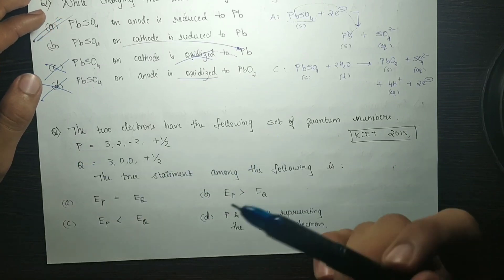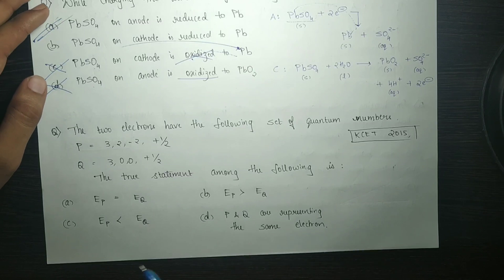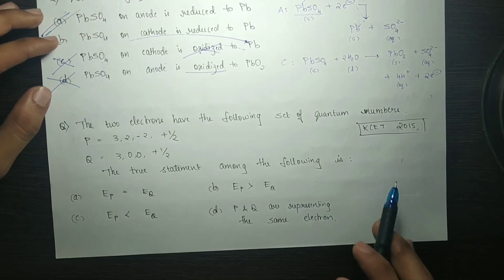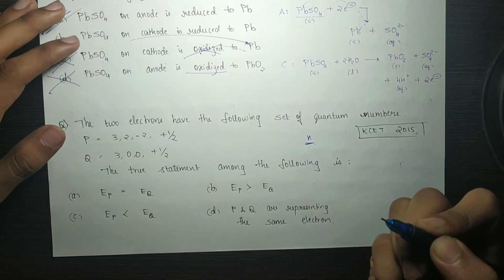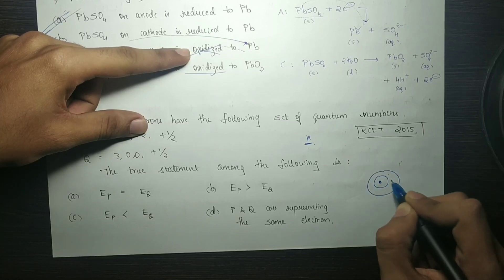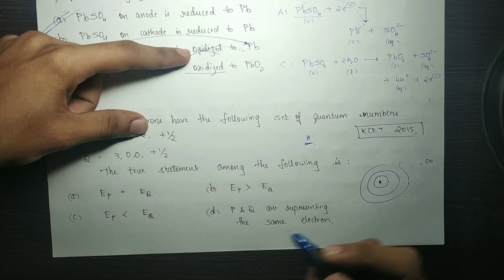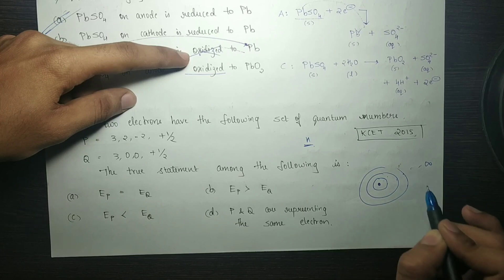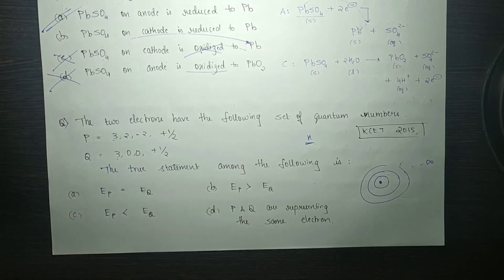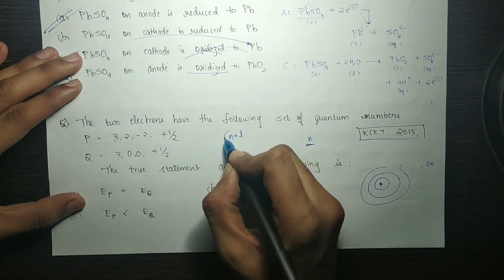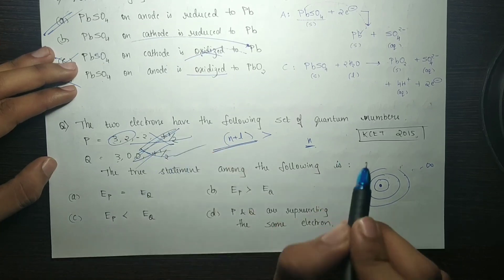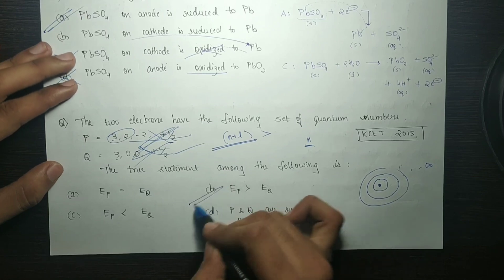Next question: two electrons have the following set of quantum numbers — P: 3, 2, minus 2, plus half. With the spin, magnetic, and azimuthal quantum numbers. The true statement among the following is: we have the n value to determine energy level — this is the shell number, K, L, M, N equal to 1, 2, 3, up to infinite orbits. We want to check the n plus l value. If using the n plus l rule, 3 plus 2 is equal to 5. So E_P is greater than E_Q — option B is perfectly correct.